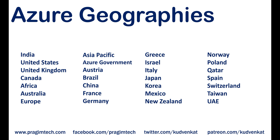Most geographies correspond to countries like India, United States, United Kingdom, Canada, etc. Some geographies like Africa, Australia, and Europe correspond to continents. Some geographies like Asia Pacific, for example, correspond to a specific region.